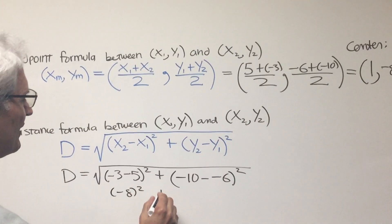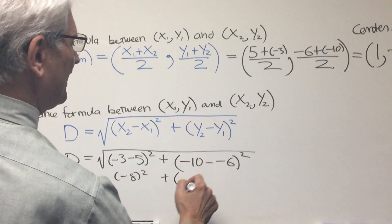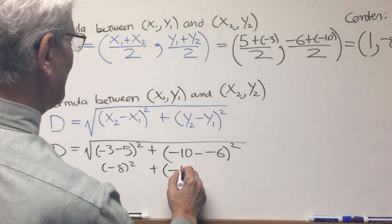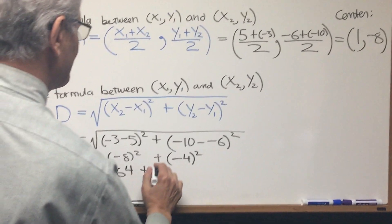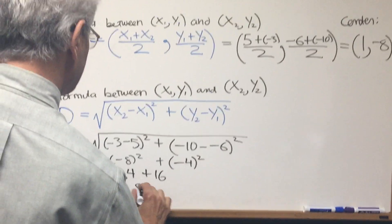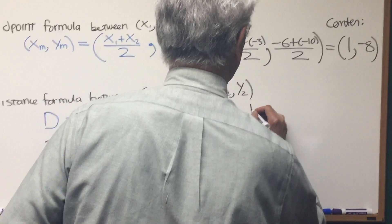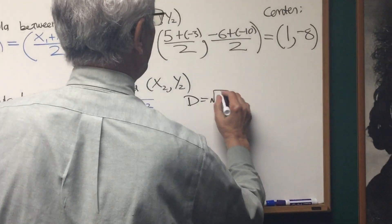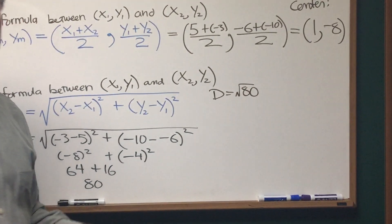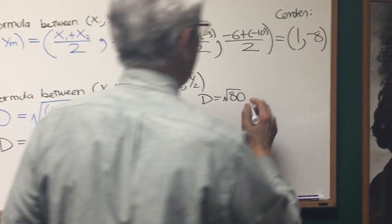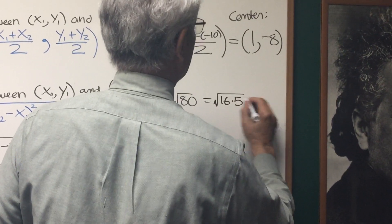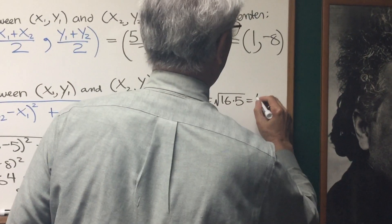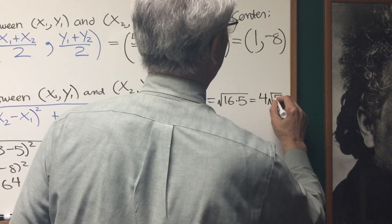So, what's that going to give us? Negative 8 squared plus negative 10, negative 6, that's going to be negative 4 squared. And that's going to give us 64 plus 16, which is going to give us 80. So, I know the diameter is the square root of 80, which if I want to simplify that, I know that 80 is 16 times 5. So, this is 16 times 5, which is equal to the square root of 16 is 4, is 4√5.